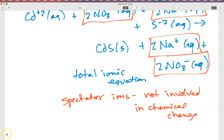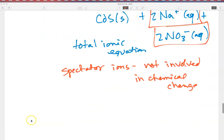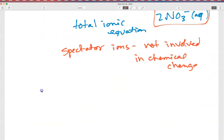If we write out this equation showing just exactly what has changed, we would write the cadmium ions plus the sulfide ions forming the cadmium sulfide solid. And this, which shows just the net change, is known as the net ionic equation.